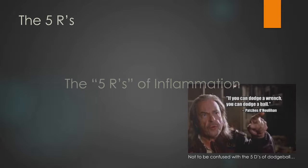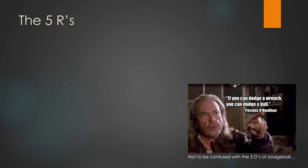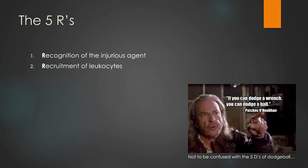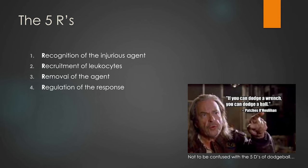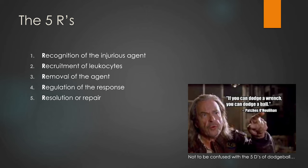Now let's jump to the five R's of inflammation — not to be confused with the five D's of dodgeball. Broadly, the five R's are: first, we need to recognize the injurious agent — if we don't recognize it, how are we going to fight it? Second, we want to recruit leukocytes, or white blood cells, to the site of injury. Third, their job is removing the agent — whether it's bacteria or a splinter. Fourth, we have to regulate the response, and finally we move toward resolution or repair.